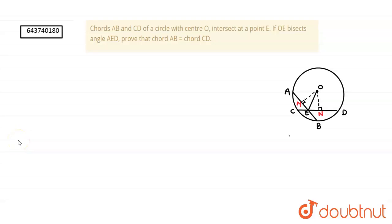We have a question of circles which says that chords AB and CD of a circle with center O intersects at a point E with OE bisects angle AED. So we have to prove that chord AB is equals to chord CD.